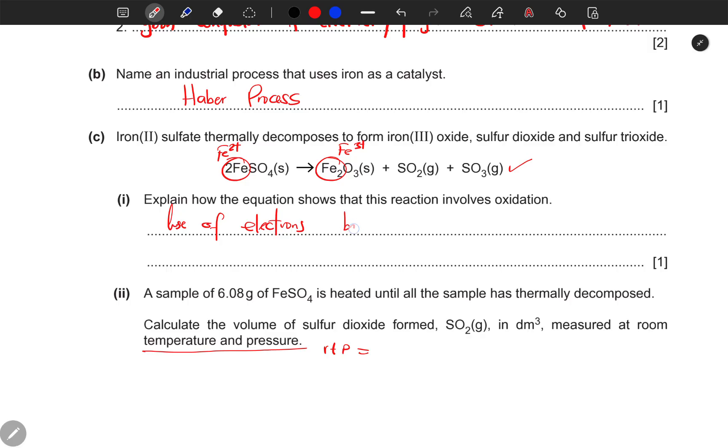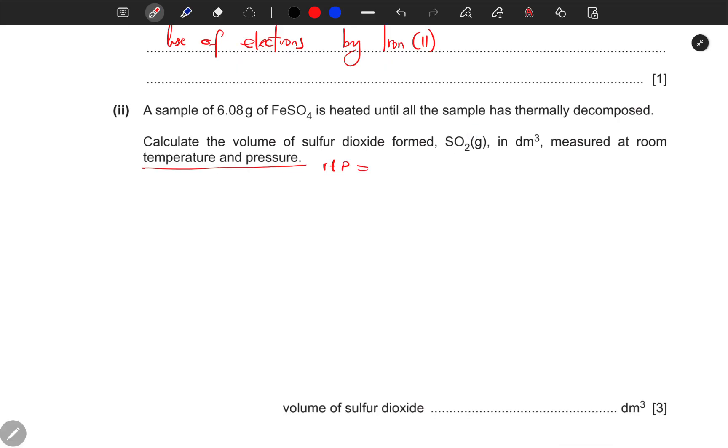A sample of iron(II) sulfate with this mass is heated until all the sample has thermally decomposed. Calculate the volume of sulfur dioxide formed in cubic decimeters at room temperature and pressure. There's a reason they've given us room temperature and pressure: because volume at room temperature and pressure, standard volume is actually 24 cubic decimeters. It's what we call the molar volume.